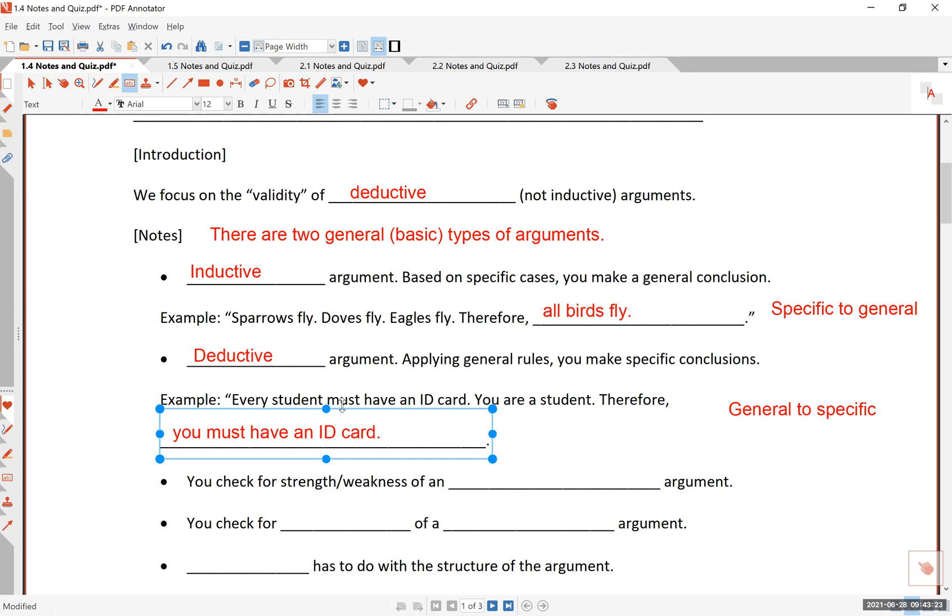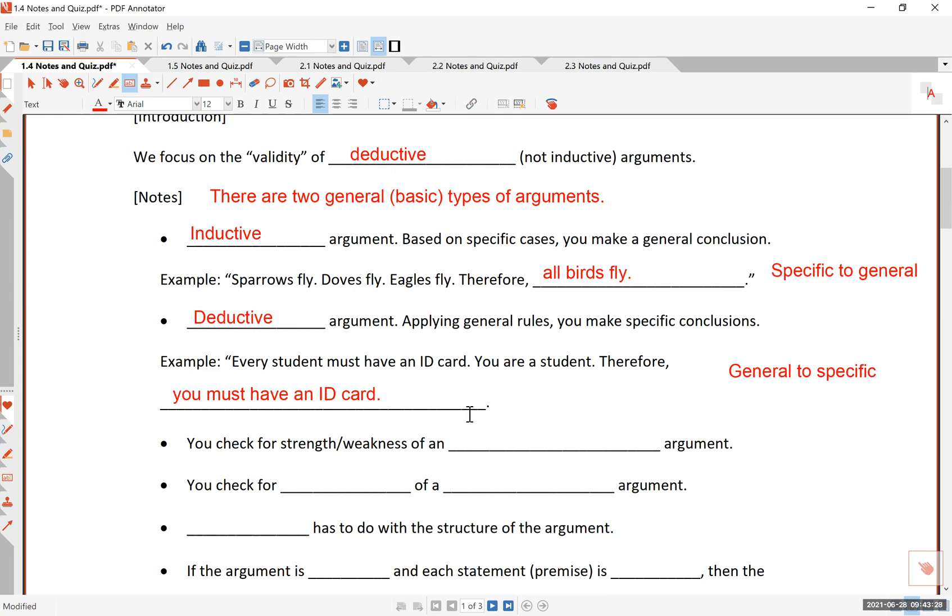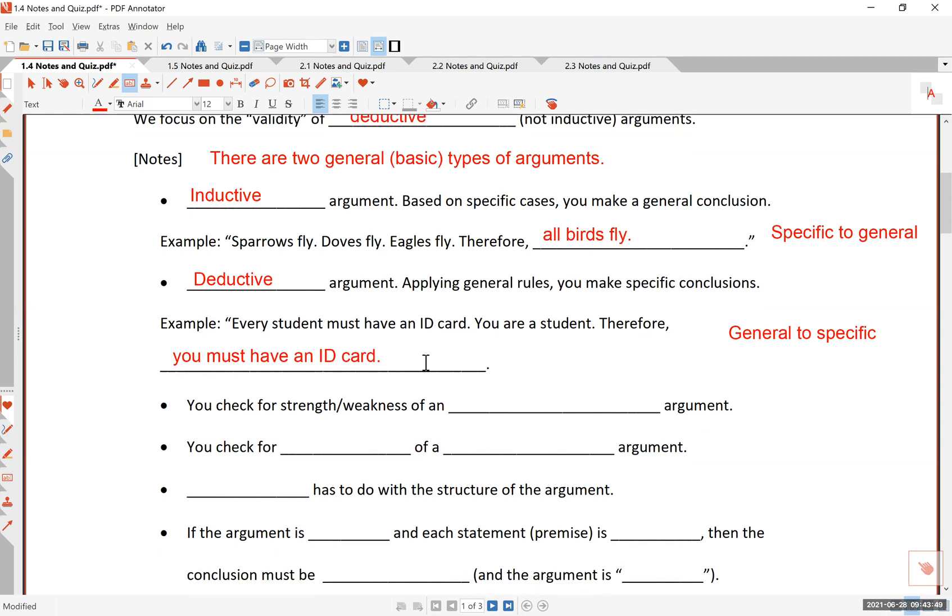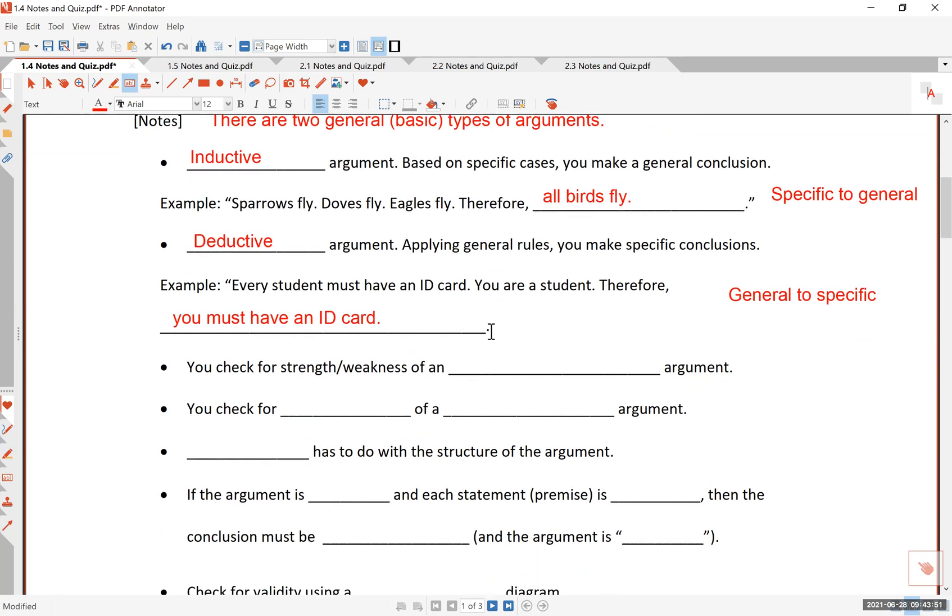Notice here I start with a general statement that applies to all students. And then we move to a specific case. Now, if these statements are true, if every student indeed has to have an ID card, and if you are a student, then there is not much room to dispute this claim that you must have an ID card. Because this statement happens to be a valid logical argument, a valid deductive argument. So the question of validity is what we are going to study momentarily.